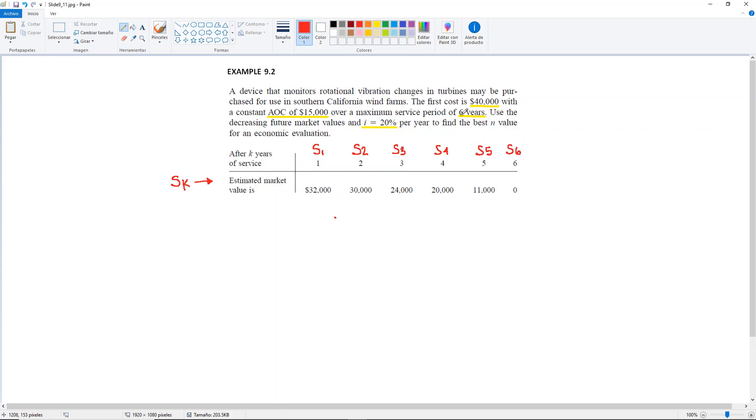Another thing that you want to point out is that here they do give you the first cost. Let me write that down. We have a first cost of minus $40,000.